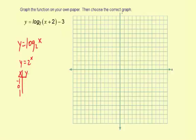Negative 1, 0, 1. So 2 to the negative 1 is 1 half, 2 to the 0 is 1, 2 to the 1 is 2. So this is the t-chart for y equals 2 to the x.